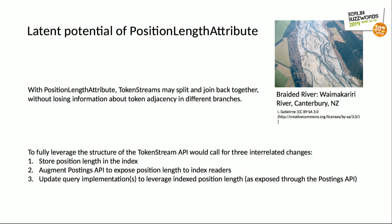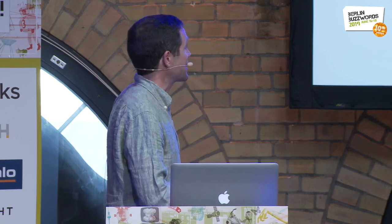To fully leverage the structure of the token stream API at indexing time would require three things more or less in concert: we would have to store the position length in the index, augment the postings API to expose position length to index readers, and update the query implementations to leverage indexed position length as exposed through the postings API. The last of these is the most challenging and causes problems for word delimiter graph filter used at index time.